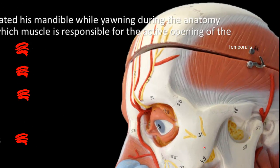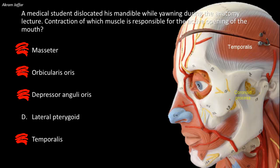Temporalis arises from the temporal fossa, as seen here, and its tendon is attached to the coronoid process of the mandible. Thus, when the muscle contracts, it elevates the mandible — that is to say, it closes the jaws — while the posterior fibers, which are more or less horizontal, can retract the mandible.